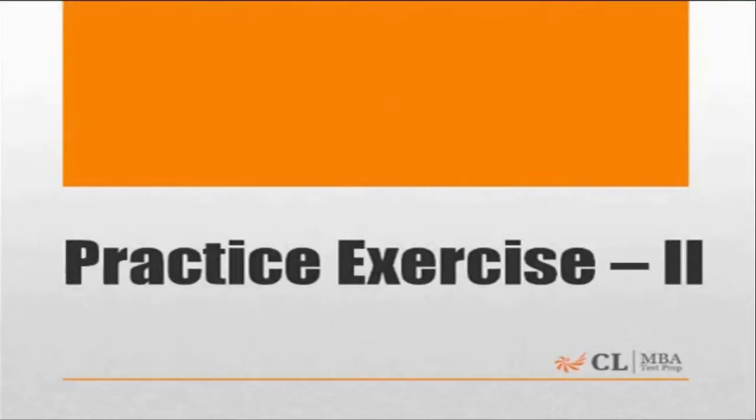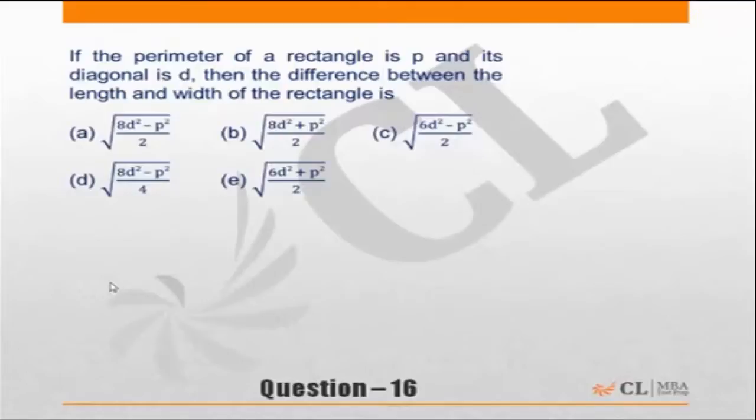We are starting with practice exercise 2. If the perimeter of a rectangle is P and its diagonal is D, then the difference between the length and width of the rectangle is.